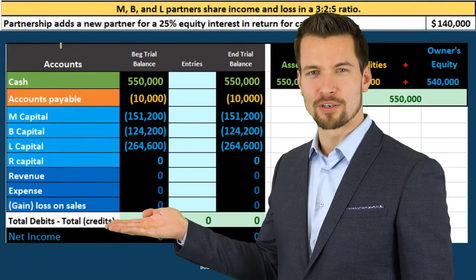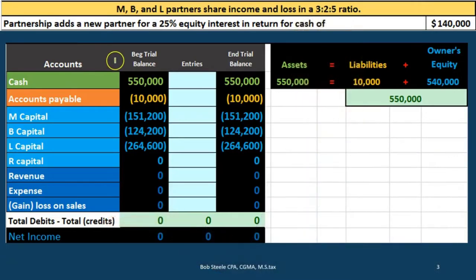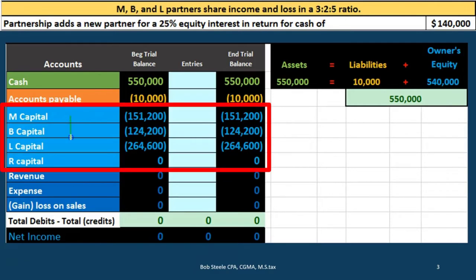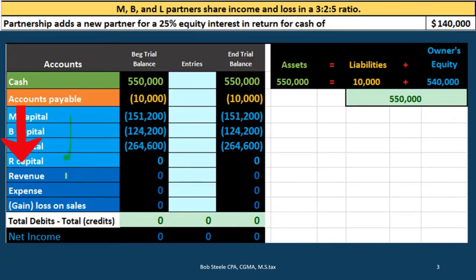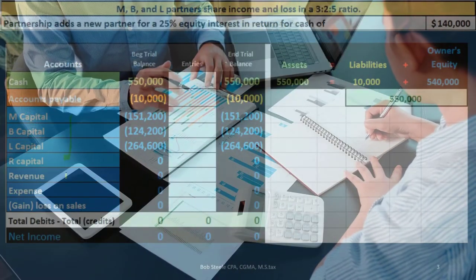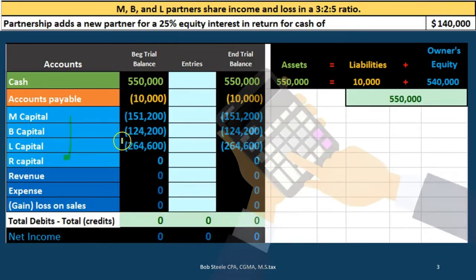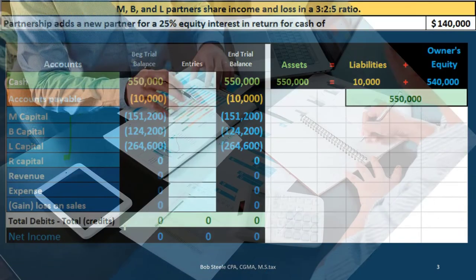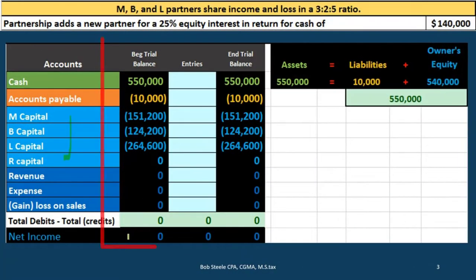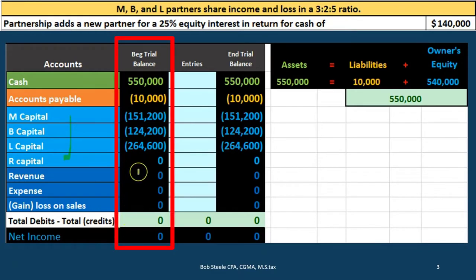We're going to work through a problem using a simplified trial balance with a beginning balance and an ending balance. The only asset is cash, accounts payable is the only liability, and we will focus on the capital accounts as we add a new partner. The income statement at the bottom shows no revenue or expenses because this is essentially a post-closing trial balance with the income statement closed out to the capital accounts. Debits are represented by non-bracket (positive) numbers and credits by bracket (negative) numbers, so debits minus credits equals zero.